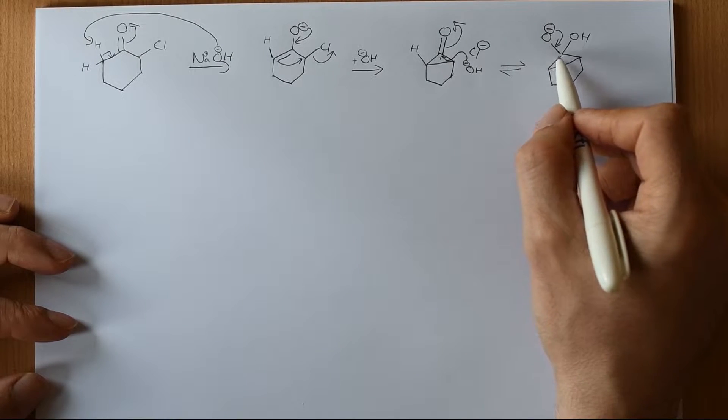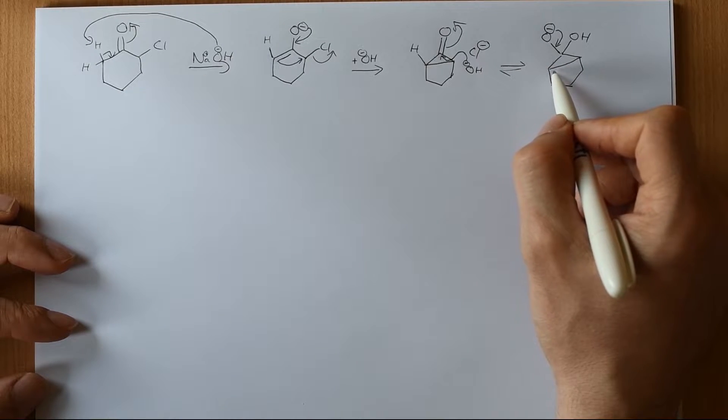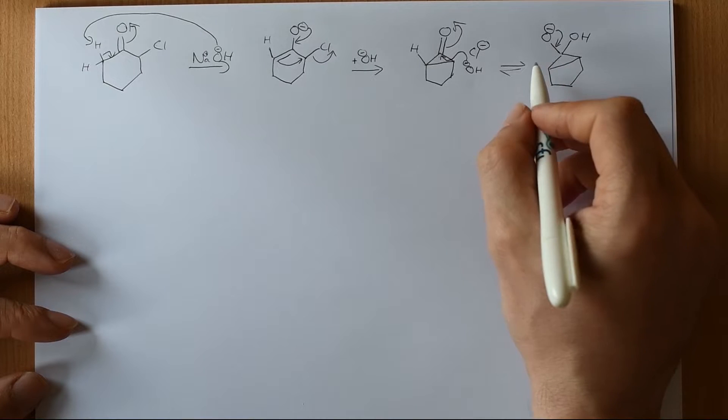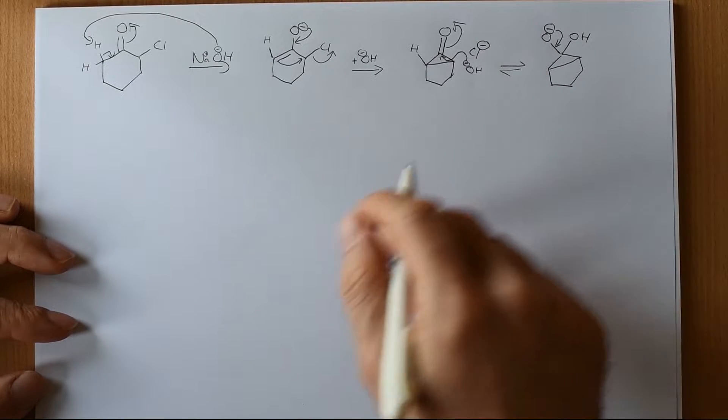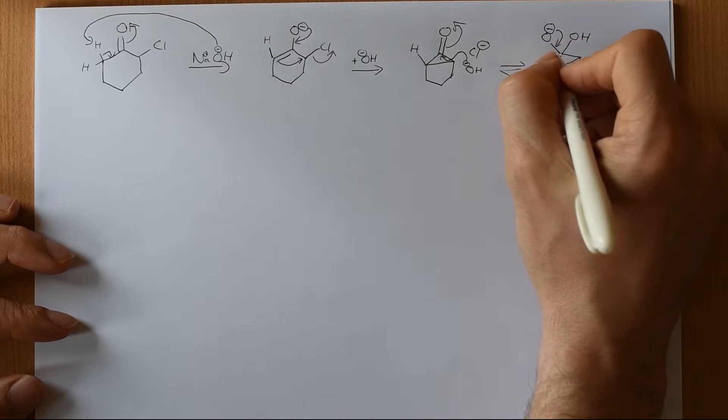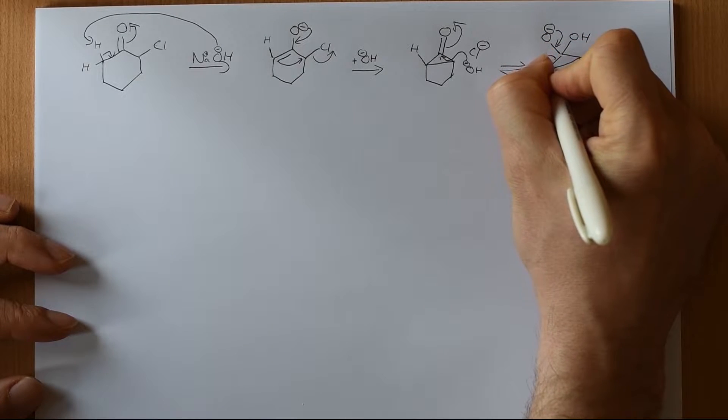In this case it doesn't matter which because this is symmetrical, but the one that is going to break is the one that will more readily sustain a negative charge on the carbon. So typically more substituted or conjugated or things as electron withdrawing groups are going to be able to better sustain negative charge. But in this case it doesn't matter. So let's push this out.